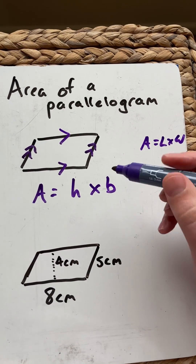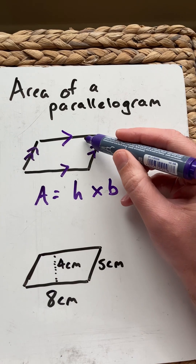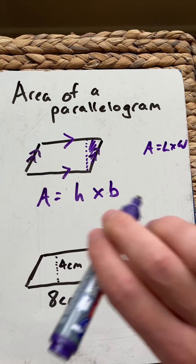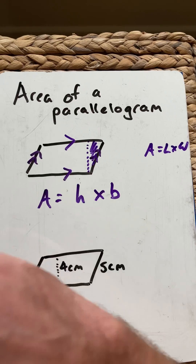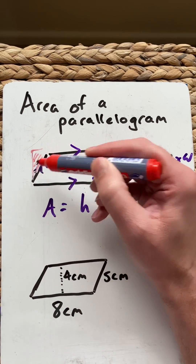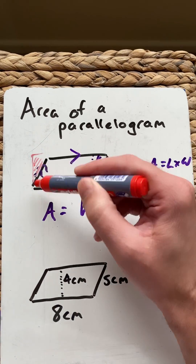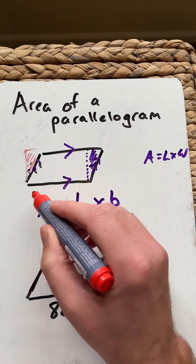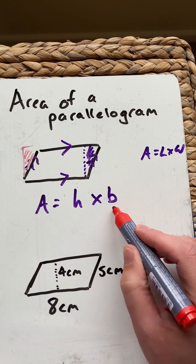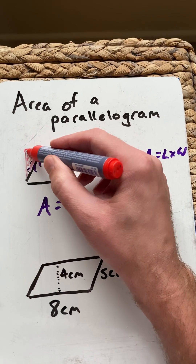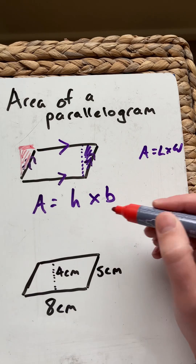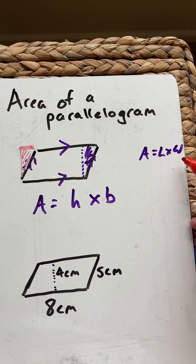Now, what we need to look at is if we were to cut a triangle off there and add that on here, then we would have a rectangle. We could use that length — which in this case we're going to call the base — and that height there, which used to be called the width, and we have that same formula.